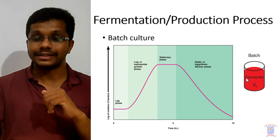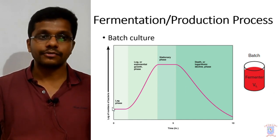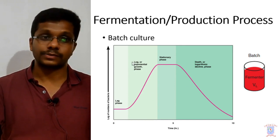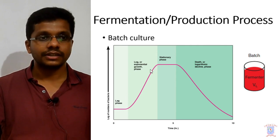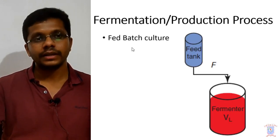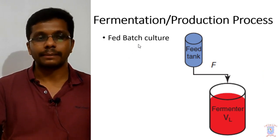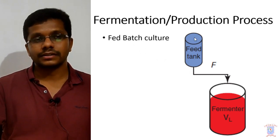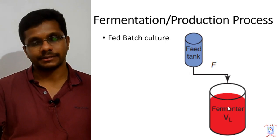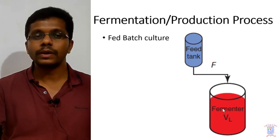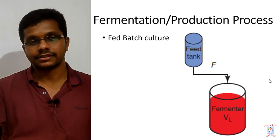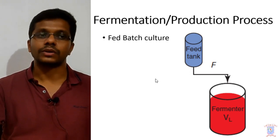In batch culture the volume of the fermenter remains constant during fermentation, and bacteria follow the typical growth curve: first a lag phase, then the log or exponential phase where the microorganism multiplies exponentially, then the stationary phase, and finally the death and decline phase. The second type is fed-batch culture, which is more or less like batch culture with one exception: there is constant or intermittent feeding of the fermenter. During fermentation some component of the medium is fed into the fermenter, but nothing is withdrawn, so the volume of the fermenter is not constant — it increases step by step.